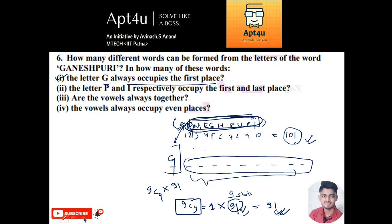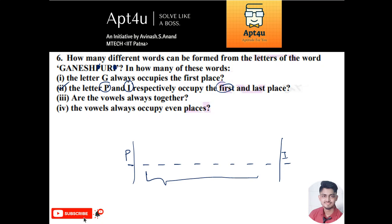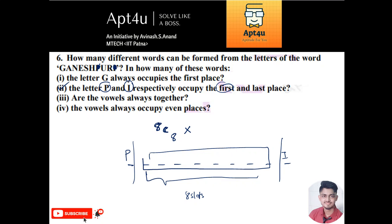The second condition: how many words are there where P occupies the first place and I occupies the last place? There are 10 slots; P is fixed at position 1 and I is fixed at position 10. That uses up two letters, leaving eight letters and eight slots. So the answer is 8C8 into 8 factorial, which equals 8 factorial.